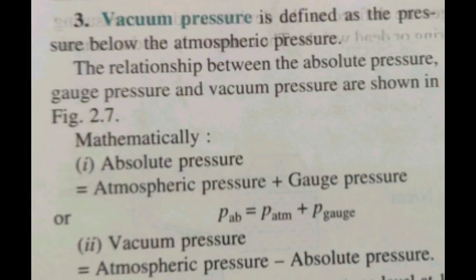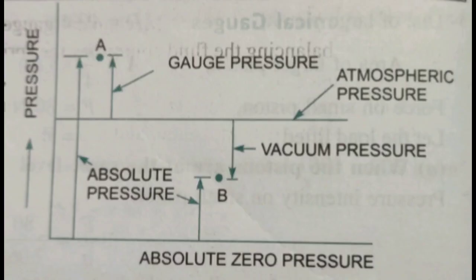What is the vacuum pressure? Vacuum pressure is atmospheric pressure minus absolute pressure.